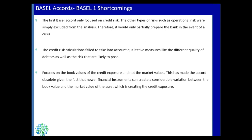After being in place for almost 10 to 15 years, as markets changed and business problems evolved, the committee, regulators, and banks understood there were shortcomings in Basel 1. The most important shortcoming was that it only focused on credit risk. There are other types of risk associated with banks, such as operational risk, meaning these norms only partially prepared banks in the event of a crisis.